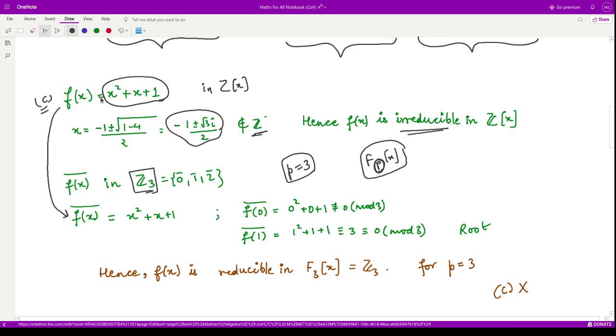So when you reduce this polynomial into mod 3, that means you will reduce the coefficients. The coefficient here is 1, the coefficient here is 1, and again here it is 1. So when you divide 1 by 3, you will get the remainder as 1. So this is the reduced polynomial which is the same as the given polynomial.